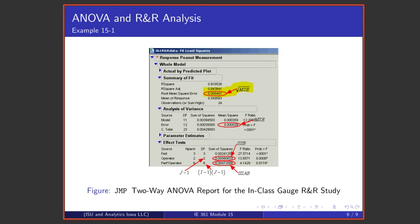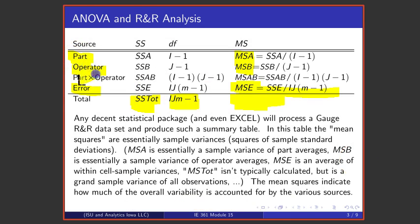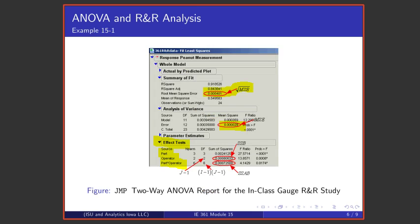This analysis of variance table again has the MSE in it. Then there is an effects test part of this output that has sources: parts, operator, and parts by operator. That corresponds to the parts, operator, and part by operator rows of the standard analysis of variance table.